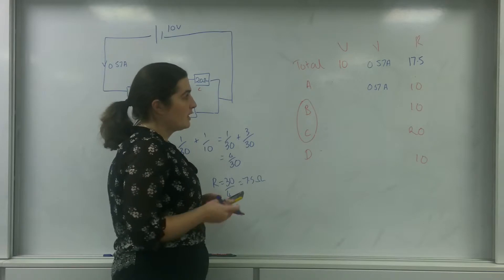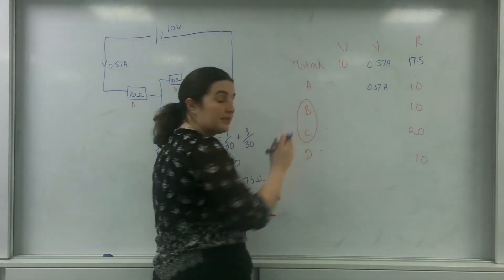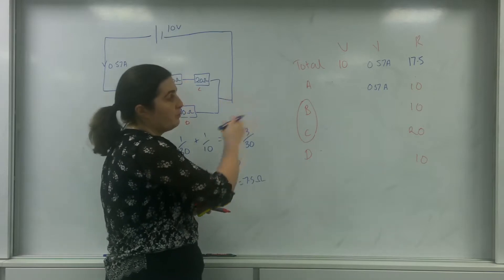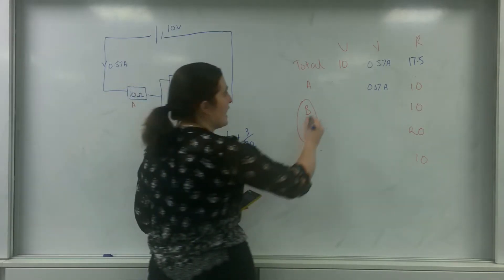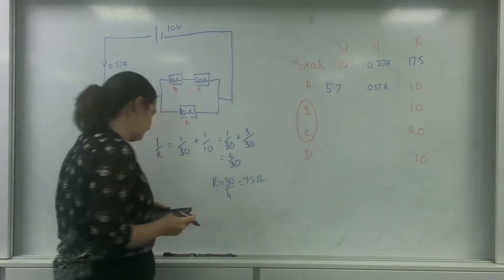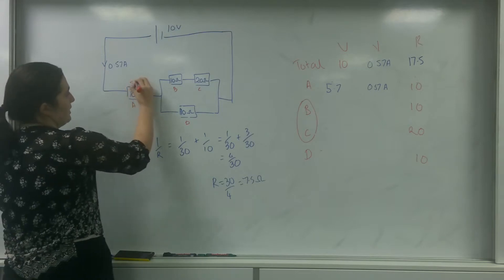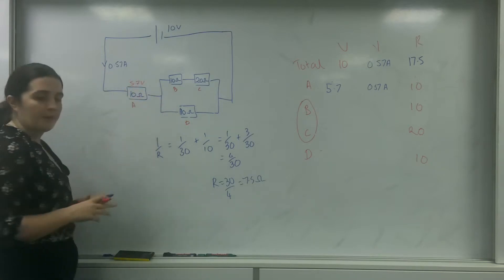Which means using V equals IR, I can work out the potential across it. So 0.57 times by 10 is 5.7. So this one here has 5.7 volts over it.